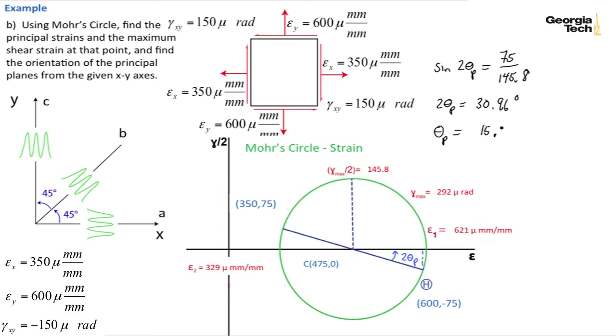That's twice the angle on the small element or the small block and so theta sub p is equal to 15.5 degrees. And we're rotating counterclockwise from the horizontal face. So we can now draw a properly oriented block. And so I have my horizontal face and I'm going to rotate 15.5 degrees from the horizontal. This is 15.5 degrees.